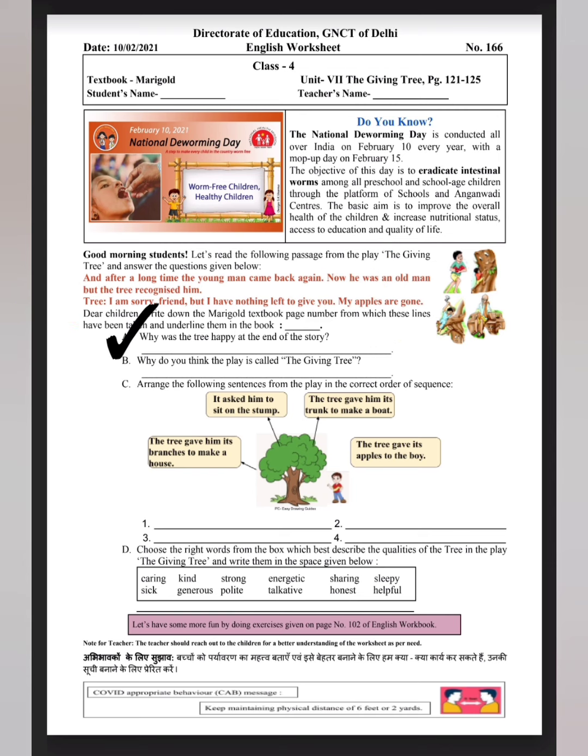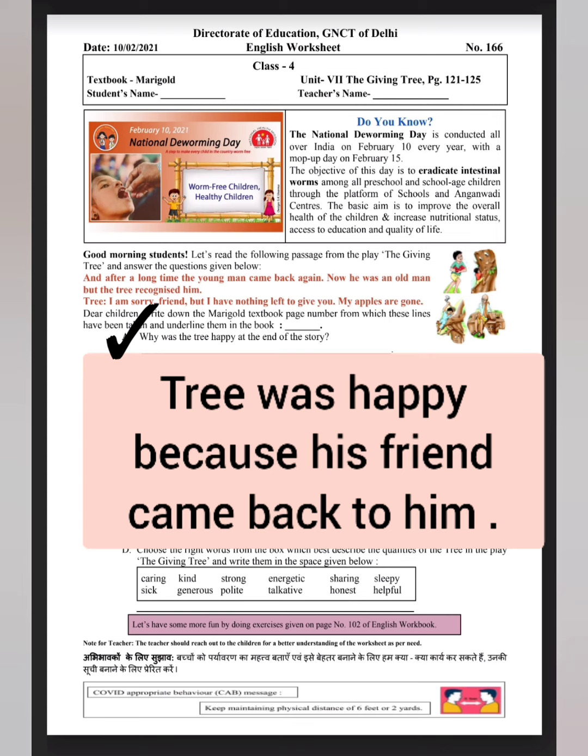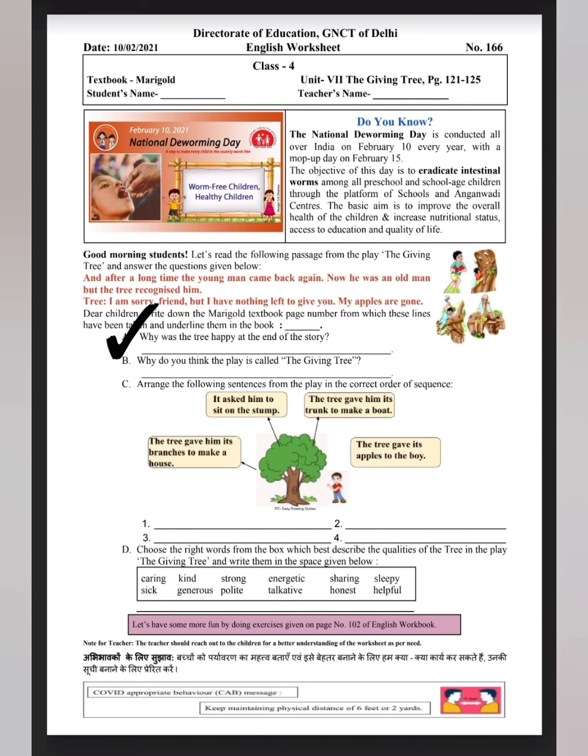Question A: Why was the tree happy at the end of the story? The tree was happy because he was spending time with his friend, which was his ultimate wish. He wanted to meet his friend.